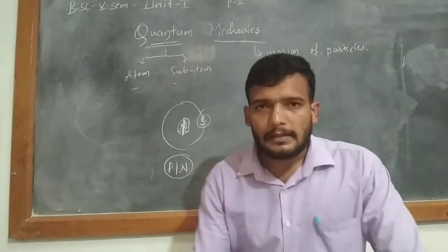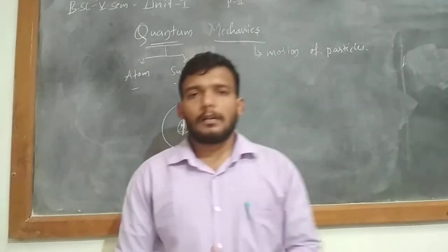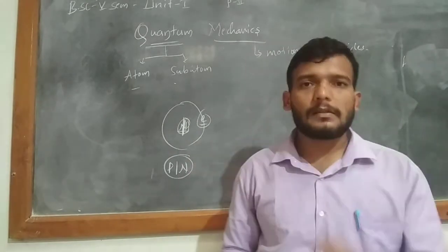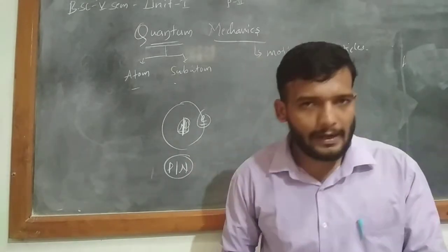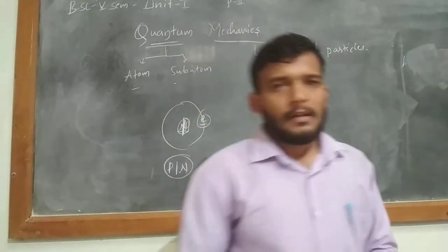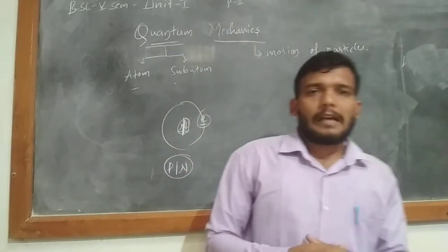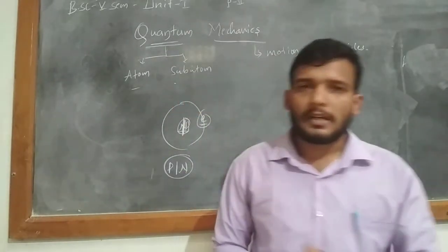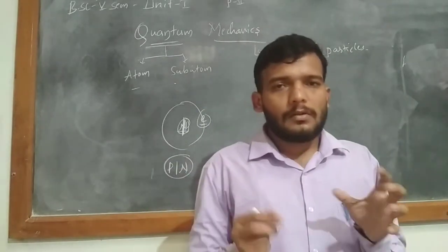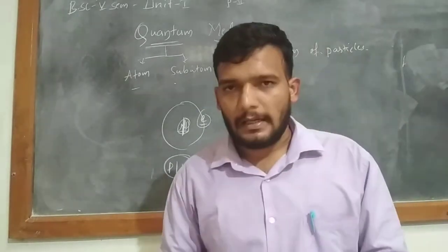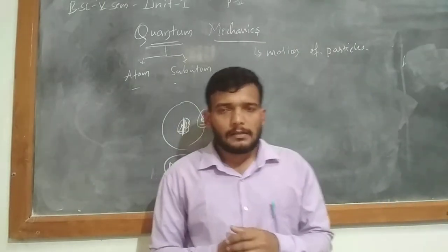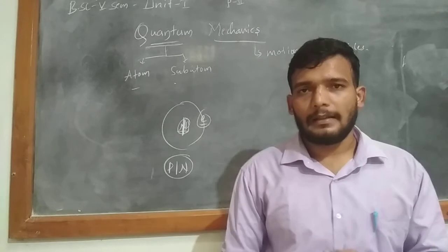Before quantum mechanics, two theories were proposed. First one is Newtonian mechanics, and the second one is classical mechanics. The classical mechanics mainly studies about the macroscopic particles — macroscopic means the observable particles. Those macroscopic particles are explained by the classical theory.